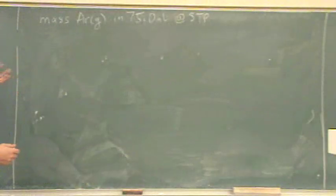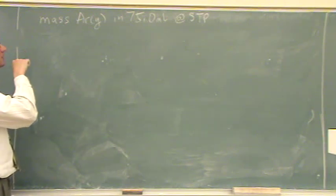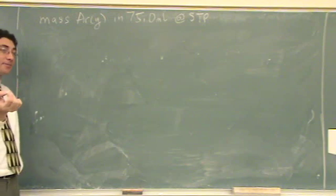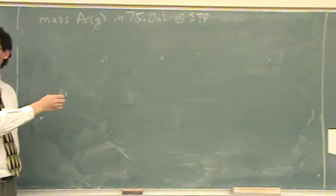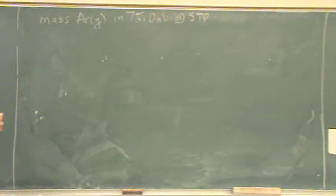Alright, so the mass of argon gas in 75 milliliters at STP. Do you have any ideas where we would start here? Definitely a gas law problem. You see gas, that's one clue. The other clue is you see the words STP, which usually indicates a gas law problem.